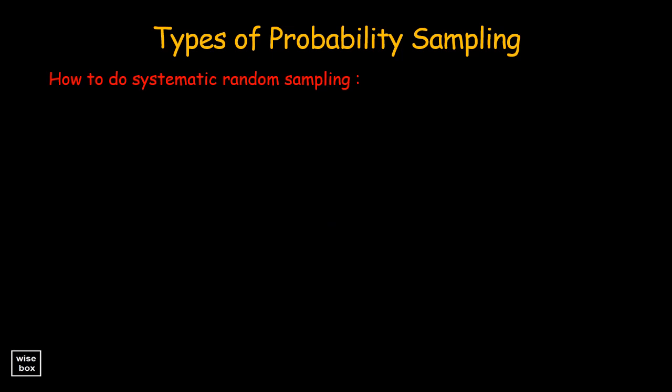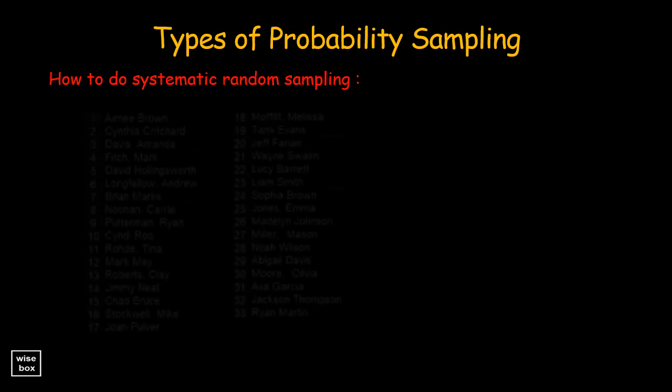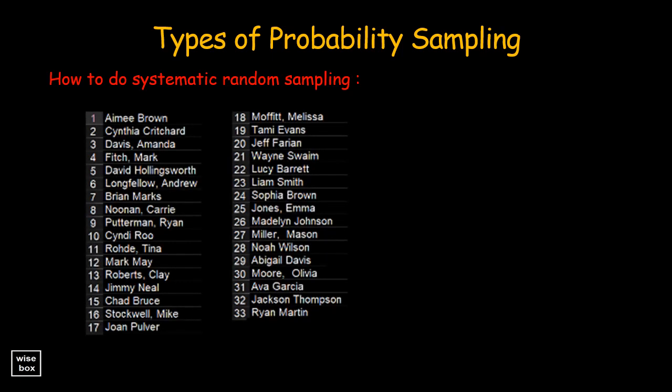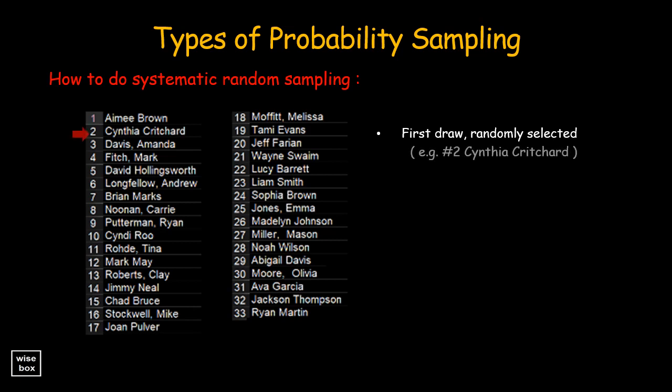Let's have another example. Here is the list of members of the population, arranged randomly, and each member assigned with numbers. The first draw must be randomly selected — for example, number 2. The random selection must follow the methods on how to do simple random sampling. You may draw from a hat, a fishbowl, use an online spinning wheel, random name picker sites, or any other random selection techniques.